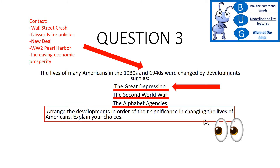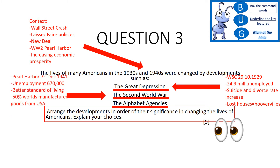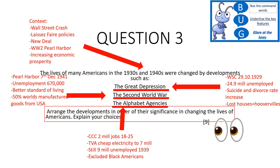Let's go through some key facts for each factor, because if we're talking about significance, we need to know what changes, how long for, and how much change there is. For the Great Depression: 24.9 million unemployed at its worst; suicide and divorce rates increased; people lost their houses and many ended up in Hoovervilles. For the Second World War: Pearl Harbor on 7th December 1941; unemployment reduced to 670,000; better standard of living; 50% of the world's manufactured goods now came from the USA. For the Alphabet Agencies: the CCC gave 2 million jobs; the TVA provided cheap electricity. However, there were still 9 million unemployed by 1939, and the agencies excluded Black Americans.